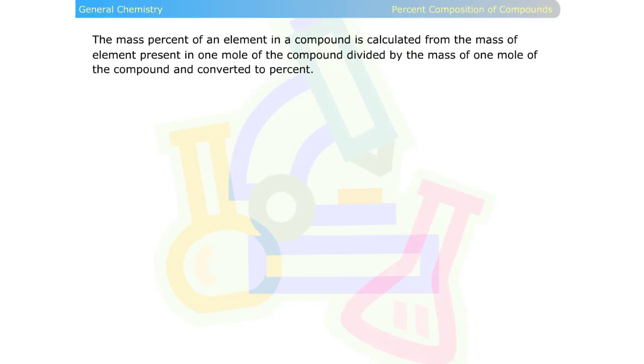The mass percent of an element in a compound is calculated from the mass of the element present in one mole of the compound, divided by the mass of one mole of the compound, and converted to percent.